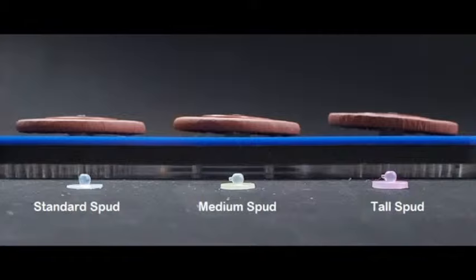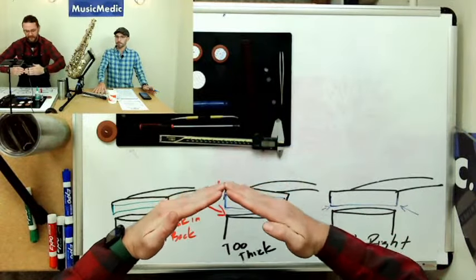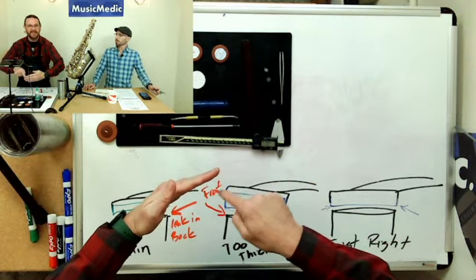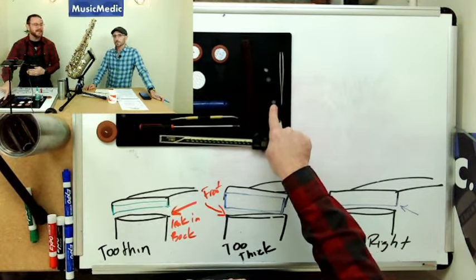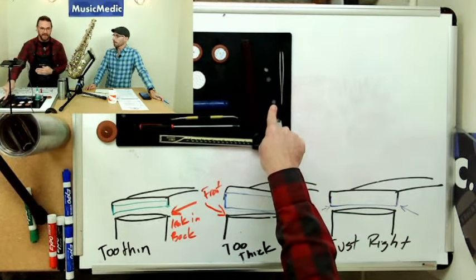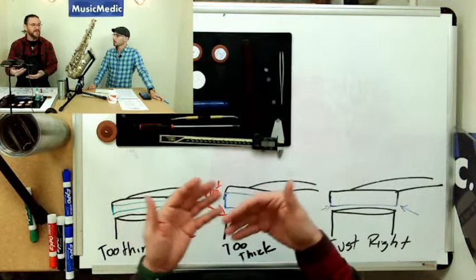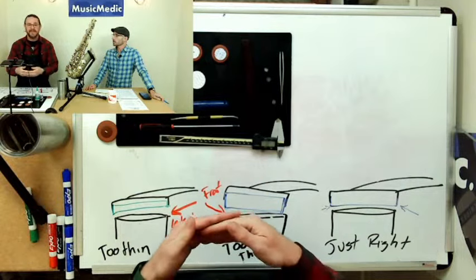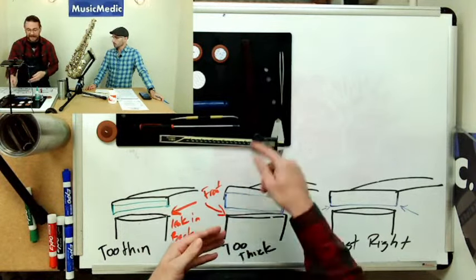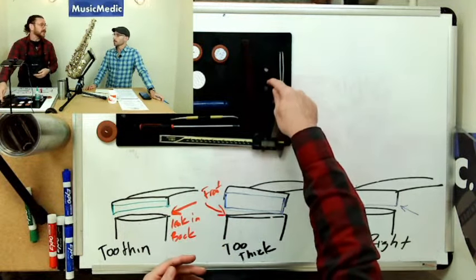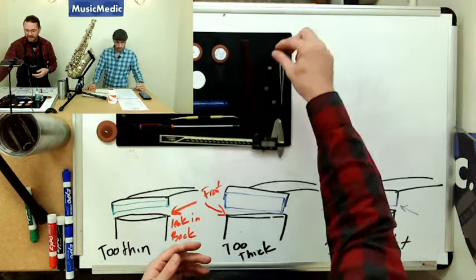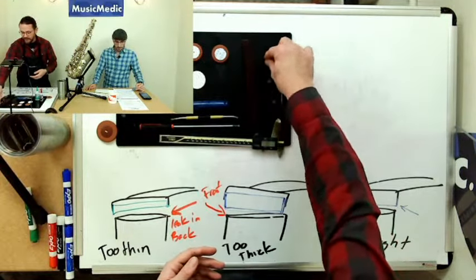So depending on the style of your pad cup, depending on the pad cup geometry, how it comes and relates to the tone hole will determine on what size spud you can use. My tip is if you're ever encountering a King Super 20 or a Zephyr with those pad cups that are very deep, they have a lot of space here. I would consider using the tall spud. Purely because that pad cup is very deep. On the other hand, if you're working on a horn that has maybe very shallow pad cups, you would just use the regular standard and then you have that medium one in there to kind of play around if you need to.